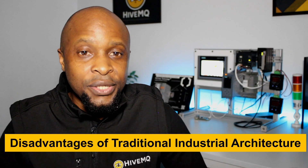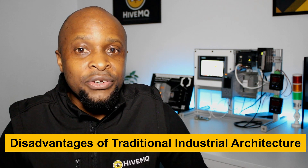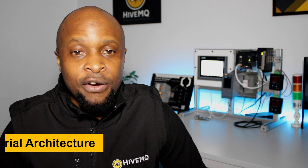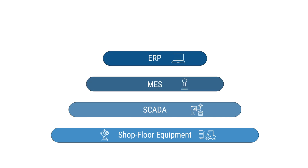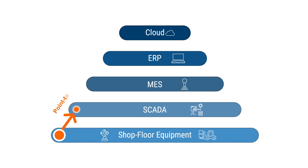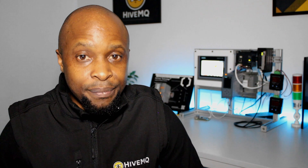To truly appreciate the significance of UNS, we must begin by highlighting why a traditional industrial architecture falls short. Traditional industrial systems use a pyramid-like network and system architecture — the ISA-95 functional model — with factory components at the bottom and enterprise or cloud components at the top. Each layer communicates only to the directly adjacent layer through point-to-point connections.